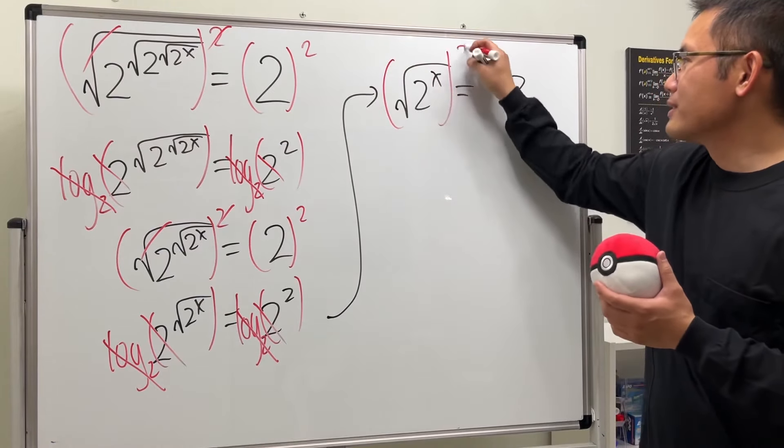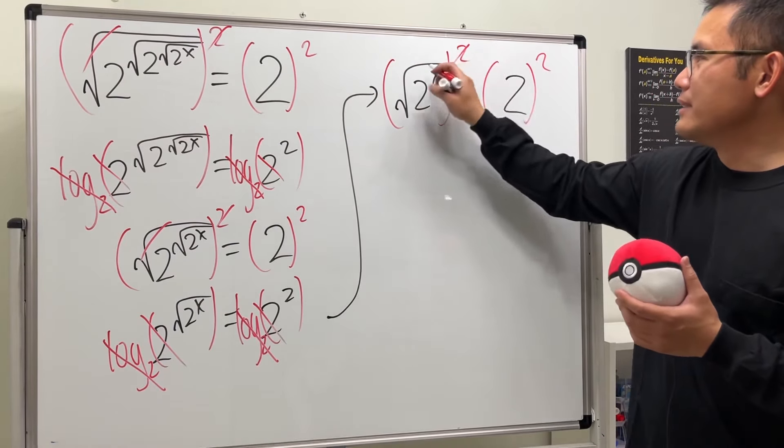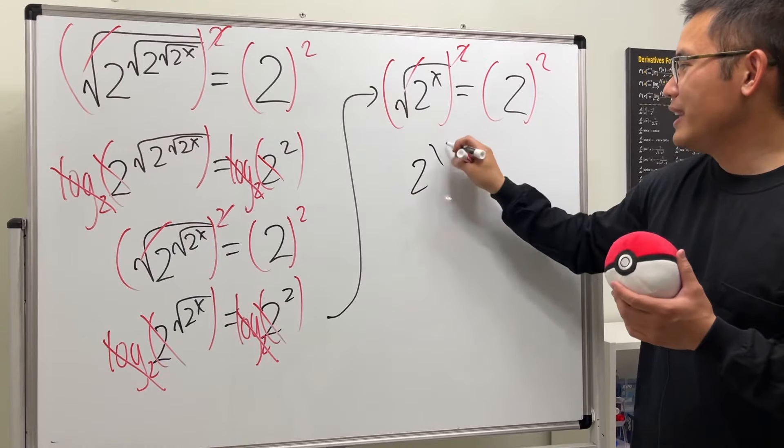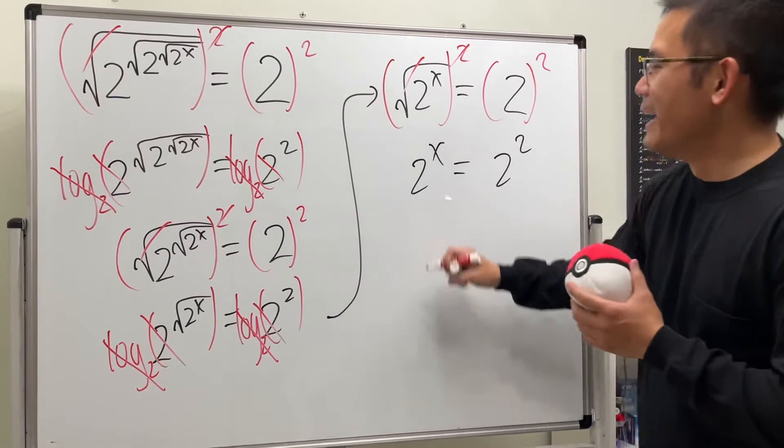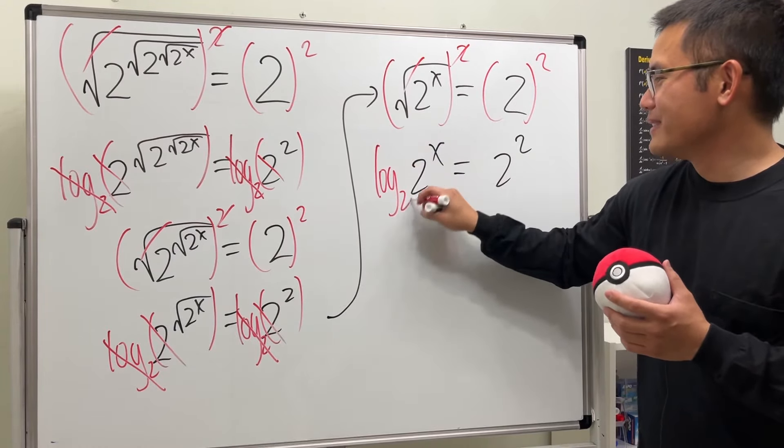What do we do next? Yeah, take both sides raised to the second power, cancel, and then we get 2 to the x is equal to 2 to the 2. Yes we are going to take log base 2 on both sides.